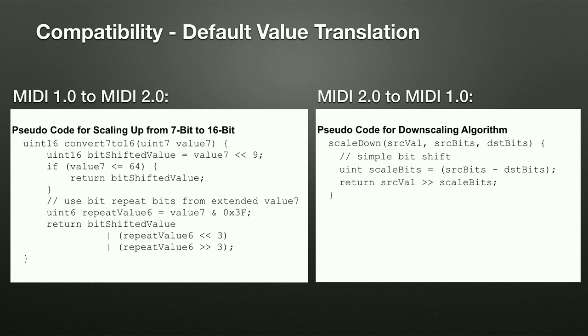The default translation for channel voice messages from MIDI 2 to MIDI 1 involves shifting: take the high bits of the 32-bit data value and you're basically done. When translating MIDI 2 to MIDI 1, values need care since MIDI 2 values are generally 16 or 32 bits, not 7 bits. Going from high to low resolution is a simple bit shift — cut off the low bits.